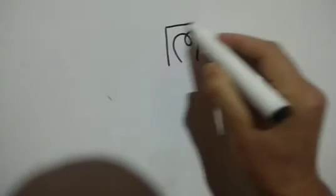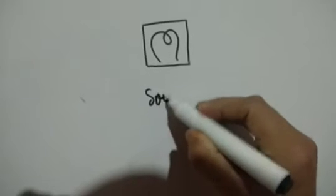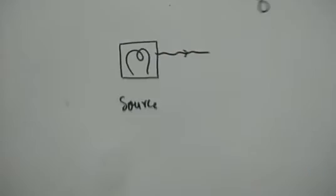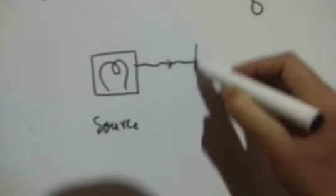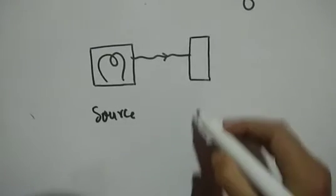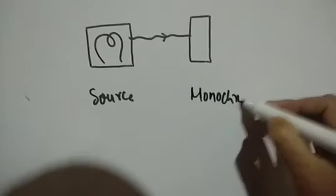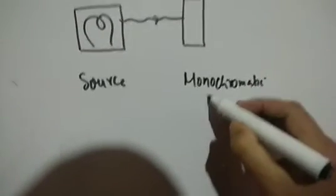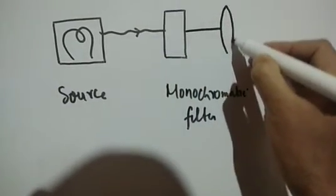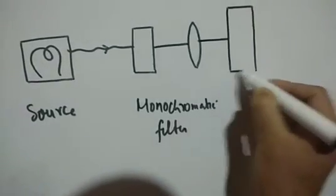We need a light source — ek lamp — a source of light that will generate the radiations. That light is passed through a monochromatic filter or monochromator to get a single wavelength. We can also use a convex lens here so that the light is focused. And finally, we have a polarizer to get a single polarized light.